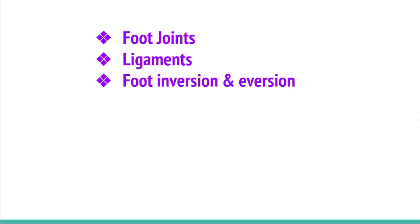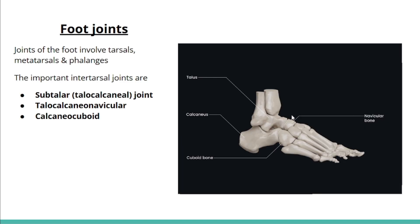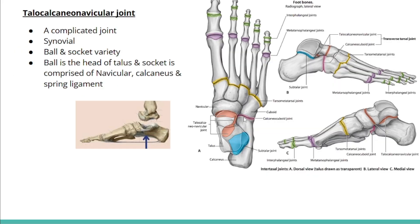This video discusses foot joints, ligaments, and foot inversion and eversion. Foot joints involve connections between the tarsal bones, metatarsals, and phalanges. Among several foot joints, we'll discuss three most important joints: the subtalar or talocalcaneal joint, the talocalcaneonavicular joint, and the calcaneocuboid joint.